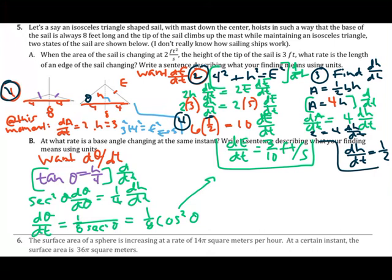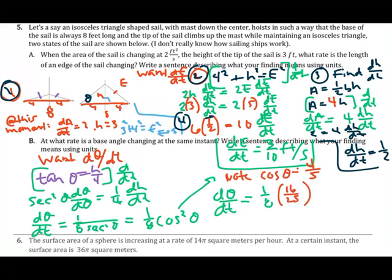So dθ/dt equals 1/8 times (4/5) squared equals 1/8 times 16/25, which simplifies to 2/25 radians per second. The base angle is increasing at a rate of 2/25 radians per second at this moment.